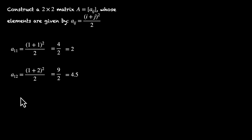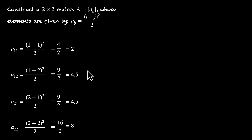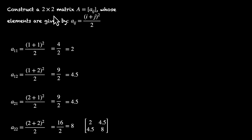We can't put j equals 3 because this is a 2x2 matrix. So we put i equals 2 and j equals 1: A21 is the first element of the second row. That's (2+1)² over 2, which is 9 over 2, again 4.5. And finally A22, the second element of the second row, is (2+2)² divided by 2, so 4² is 16 over 2, that's 8. Now we have all elements and can make our matrix: [2, 4.5; 4.5, 8]. This is our 2x2 matrix.